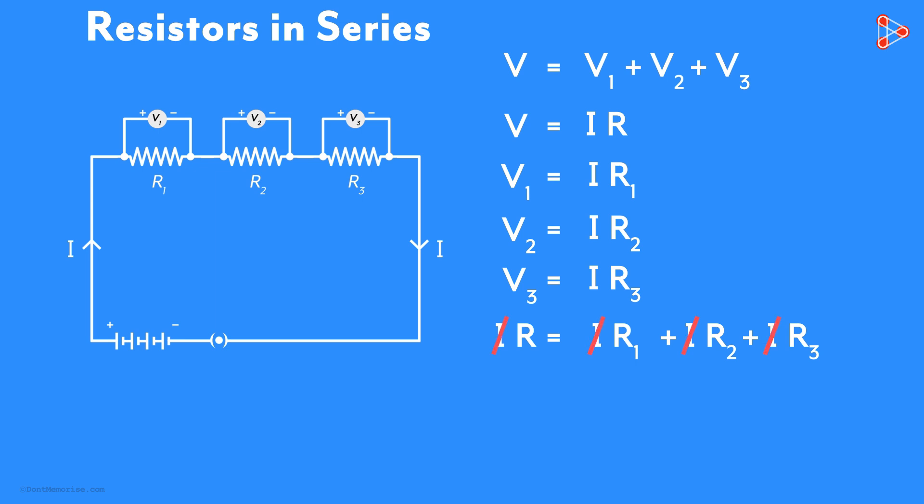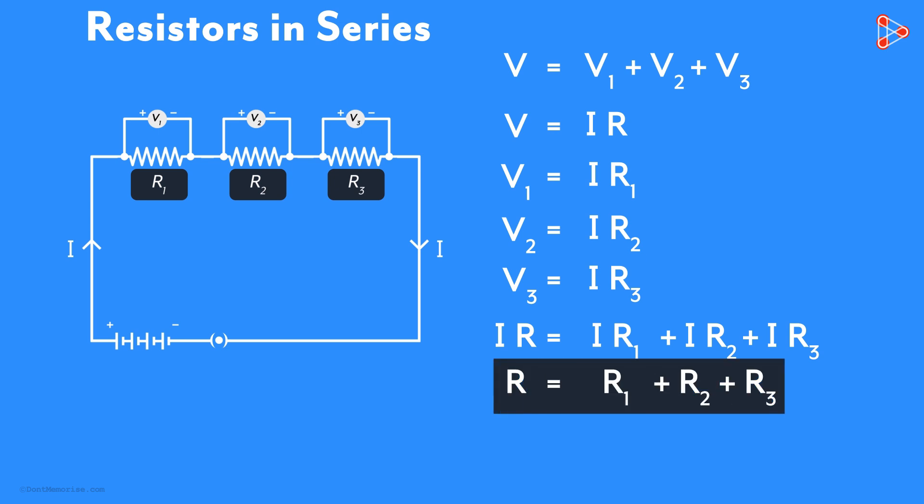Dividing both sides by I, we get the value of R as this. What did we just get? When two or more resistors are connected in series, the overall combined resistance R is the sum of the individual resistances.